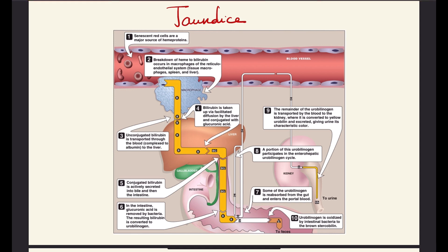It starts in the red blood cells — we know that bilirubin is a component of heme. There is the breakdown of red blood cells by the macrophages that are part of the reticular endothelial system, whether it's the tissue macrophages or the macrophages in the spleen or the liver. When bilirubin is broken down, it is transported through albumin — it binds to albumin — and transported in the blood until it enters the liver through facilitated diffusion.